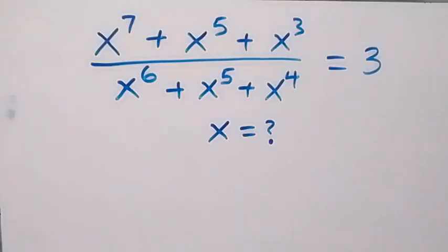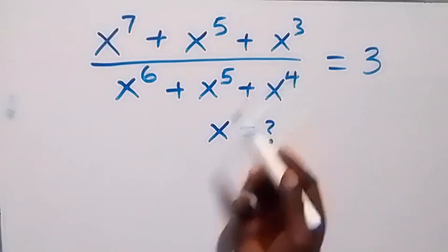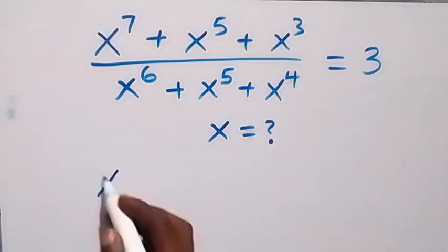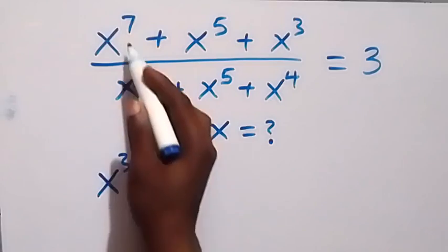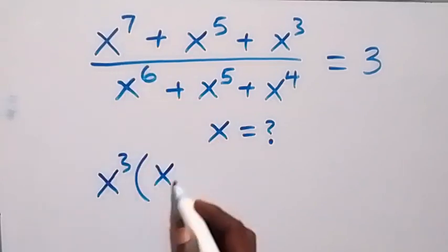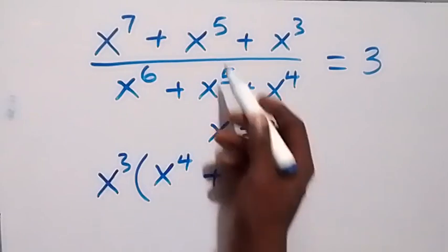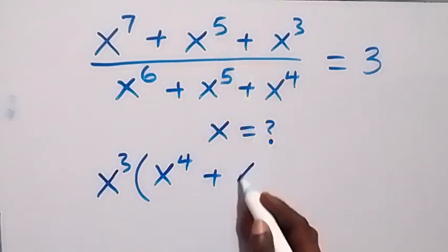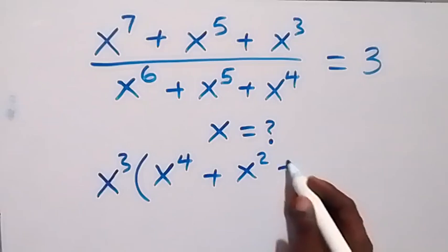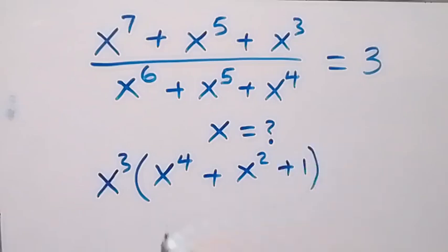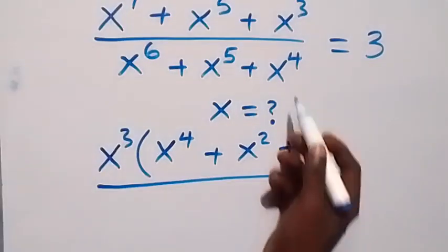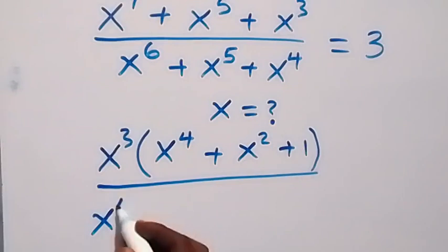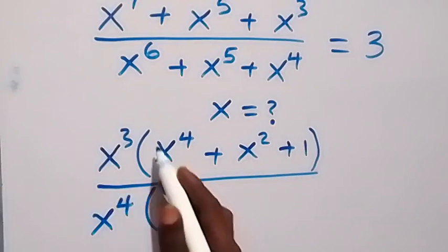Hello, you are welcome. How to solve for x in this nice algebra problem. What we have here, we can factor x raised to power 3 out of the numerator, and from the denominator we can factor x raised to power 4 out, giving us x raised to power 4 into bracket.